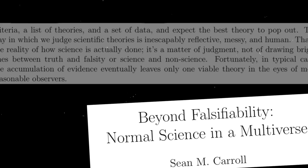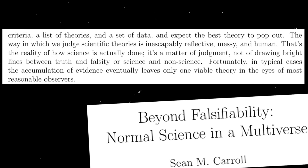The issue with getting the killer data really comes down to how a particular theory survives. Some of it is due to the strength of evidence and strength of data, but you can have very strong evidence and if the prevailing opinion within a community is in the other direction, you're going to have to fight really hard — particularly if you're a small group. If you've got world-leading groups saying 'this is the paradigm that works' and you're a PhD student trying to get it through, you're going to have a hard time. As Carroll says: 'The way in which we judge scientific theories is inescapably reflective, messy, and human.' It's a matter of judgment, not of drawing bright lines between truth and falsity, or science and non-science.